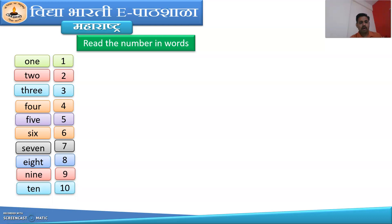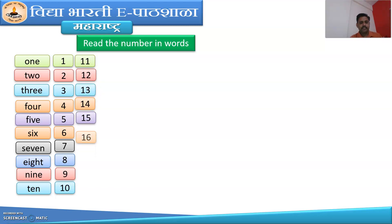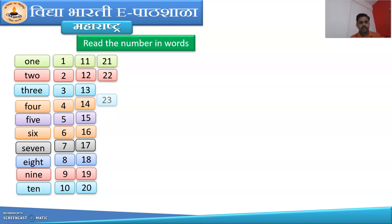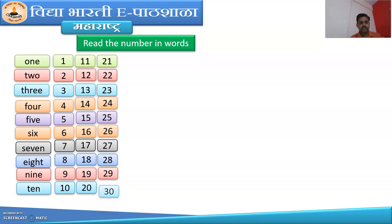You have to read all these numbers from 1 to 100. So these are the numbers: 11, 12, 13, 14, 15, 16, 17, 18, 19, 20. Then 21, 22, 23, 24, 25, 26, 27, 28, 29, 30.